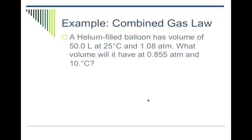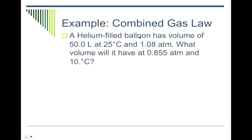All right, so example for this one. We have a helium-filled balloon, has a volume of 50 liters at 25 degrees Celsius and 1.08 atmospheres. What volume will it have when I release it into the air and the pressure decreases quite a bit, as does the temperature? So I see all these variables means I know I'm using the combined gas law. I'm just going to start writing everything out.